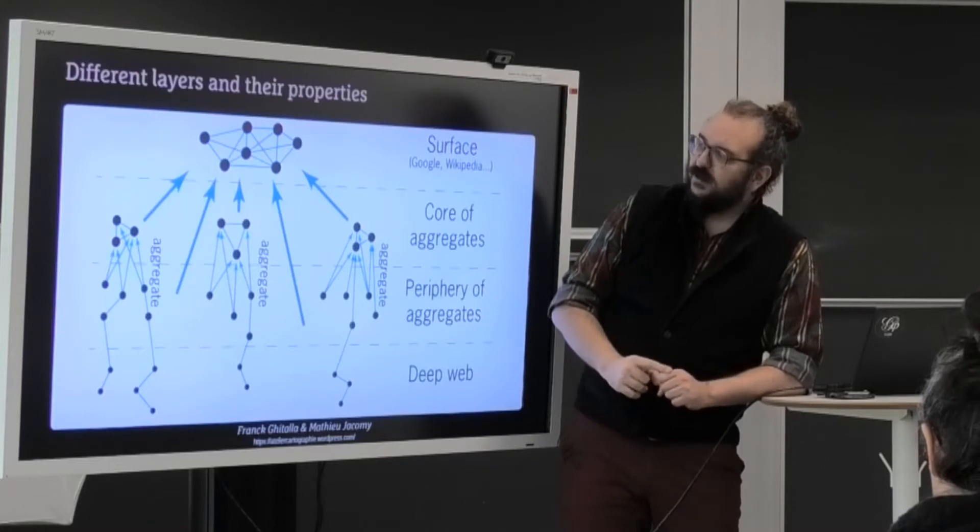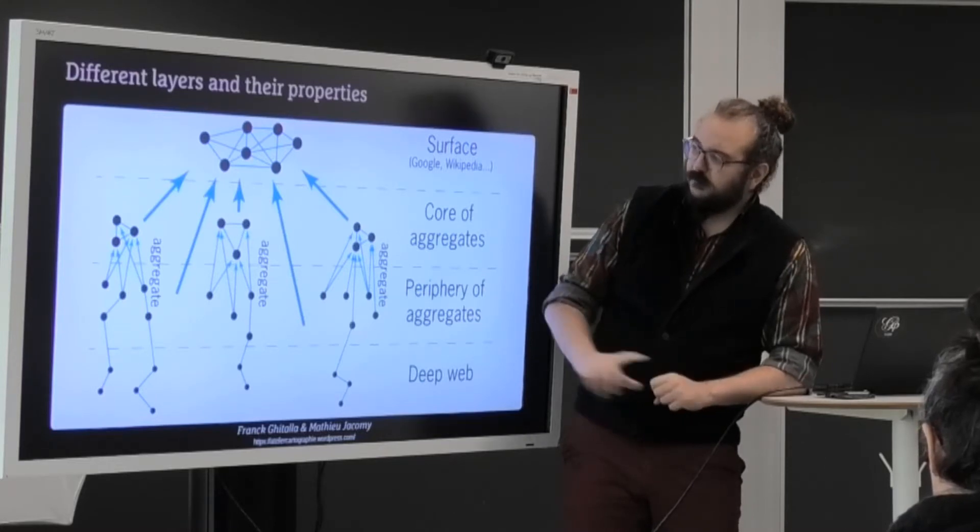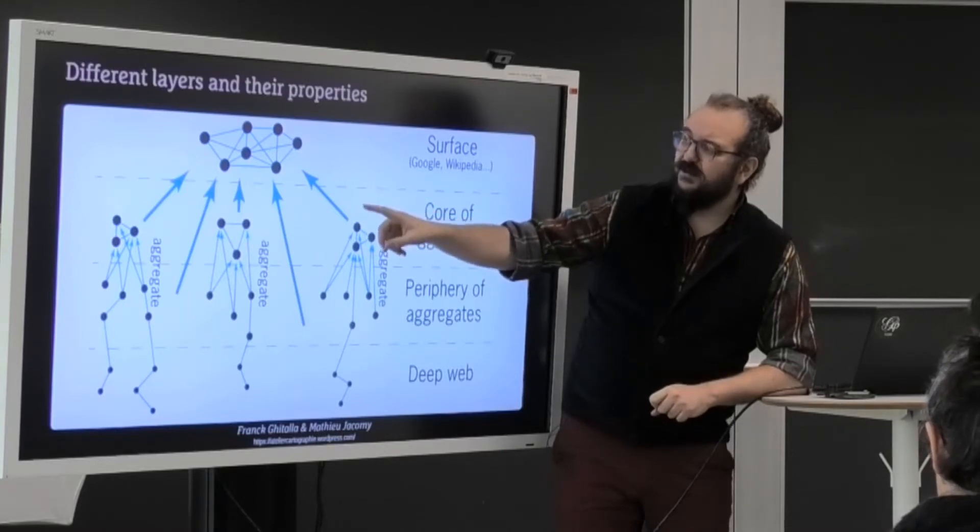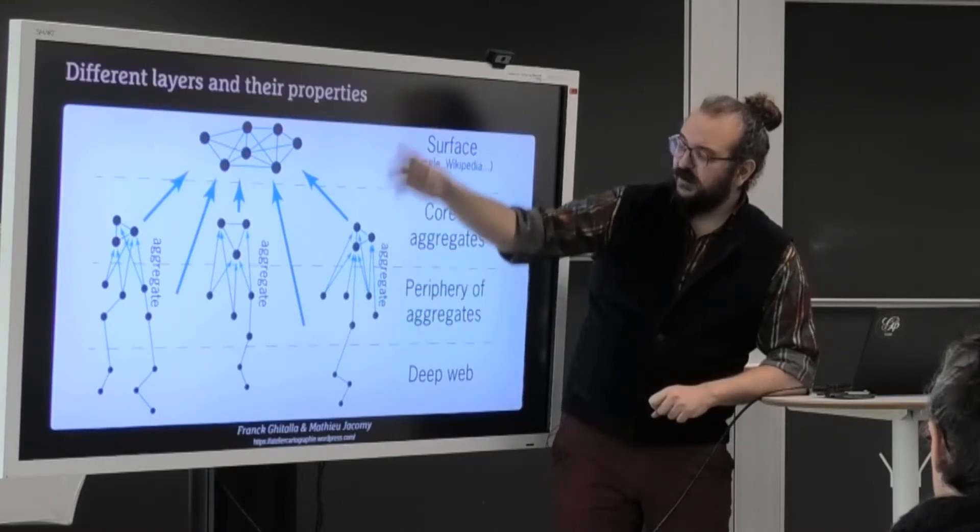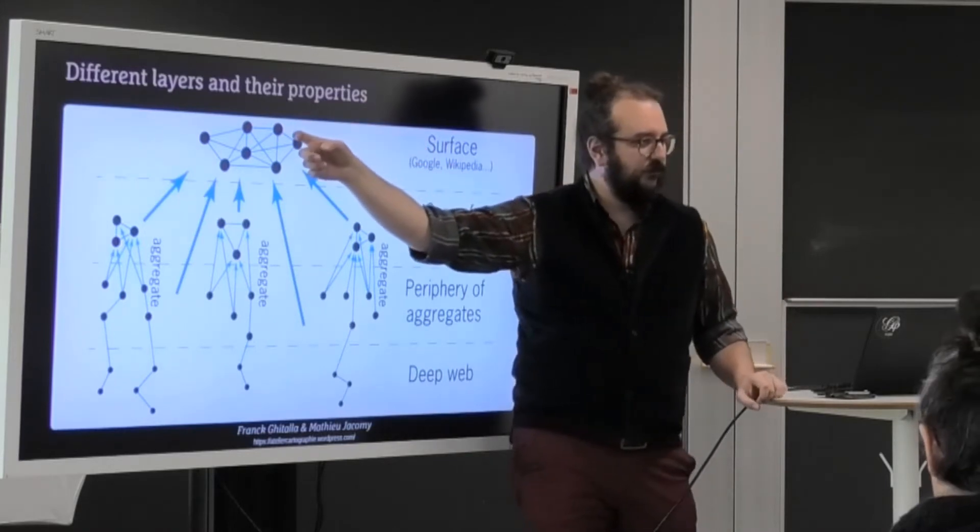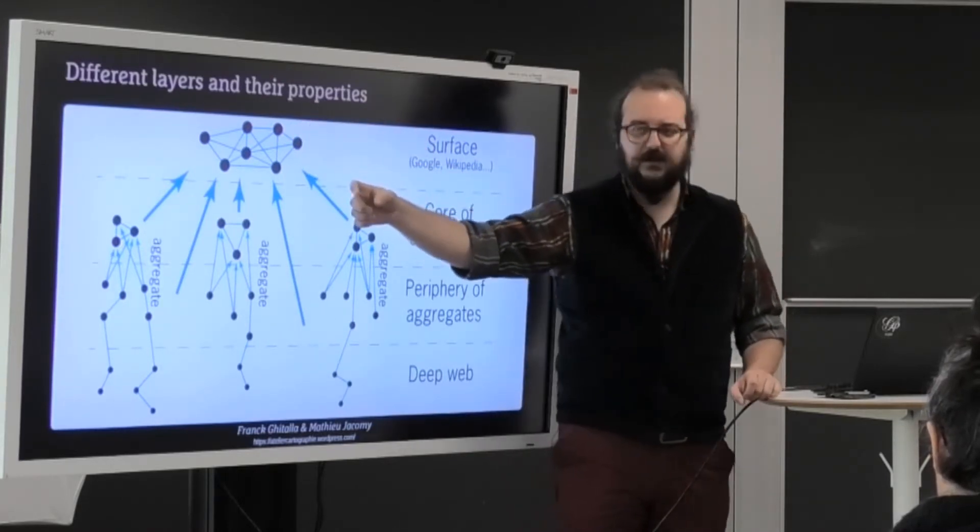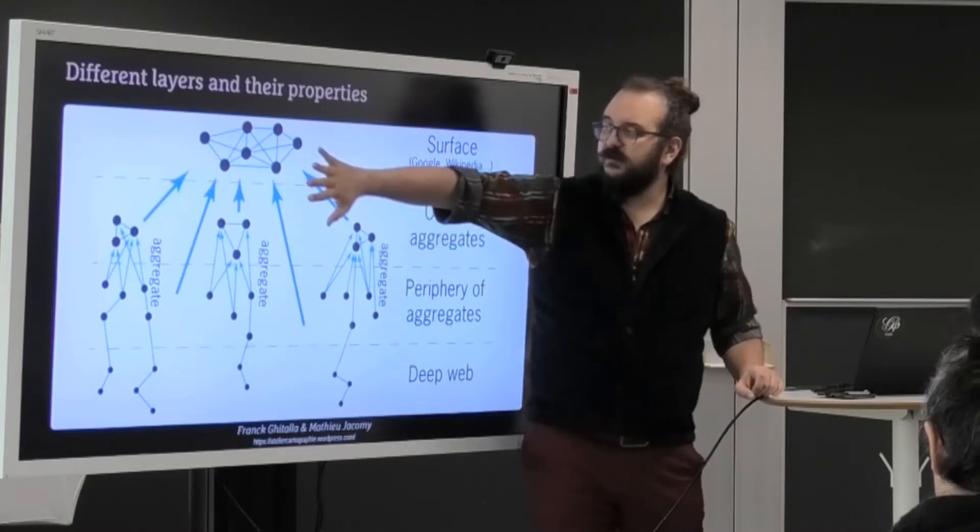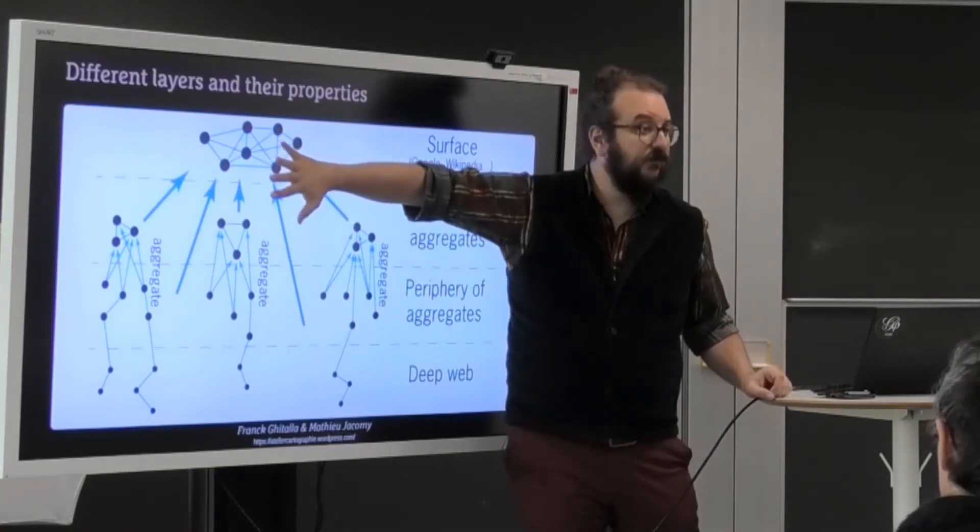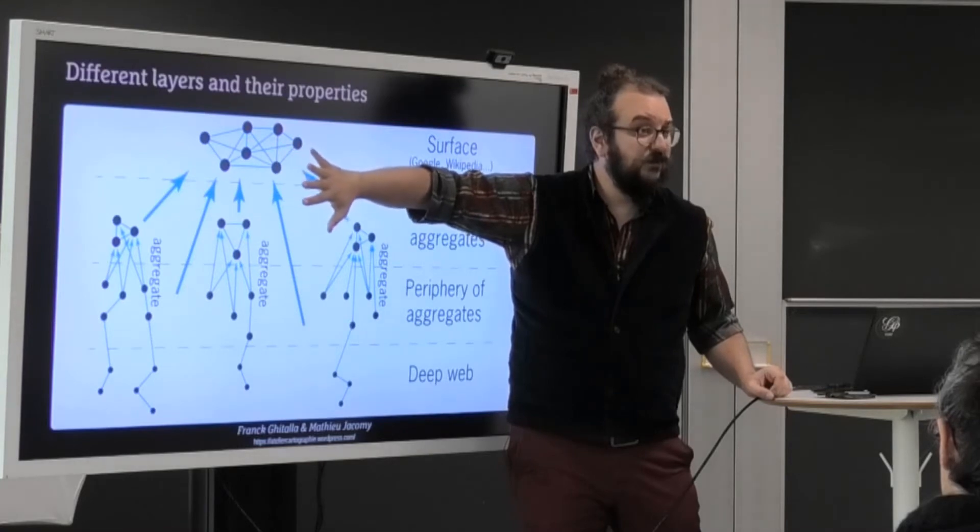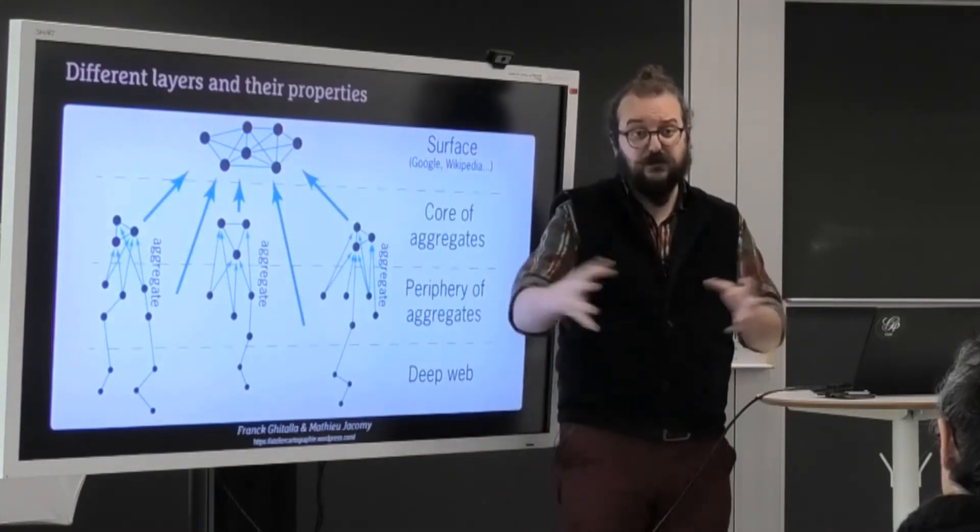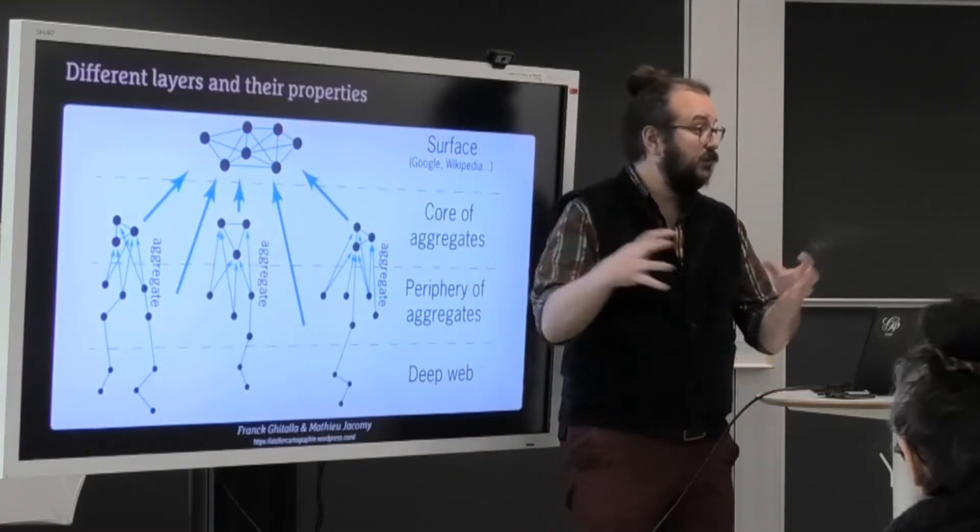Now, the bad news is that the core is cited by everyone. That's why you have these huge blue arrows that come from even the deep web pointing to the core. And it means that if you want to see the aggregates, you have to remove the core, the surface of the web. Because if you don't remove it, everything looks connected because everyone is pointing to Wikipedia and stuff like that.